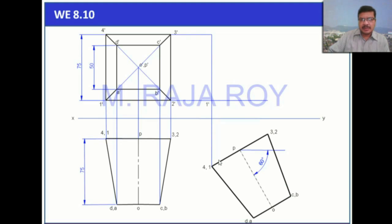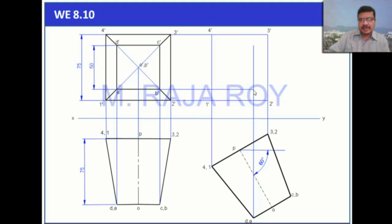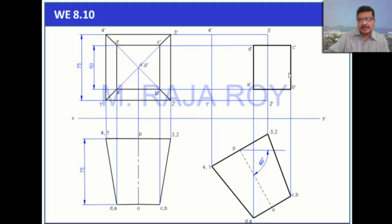Now project all the points to the front. This is the projector of 4 1 — draw the locus from 1 dash to get 1 dash here and 4 dash here. This is the projector for 3 2: here you get 2 dash and here 3 dash. Draw the projector for da — point a gives a dash and t dash here. Extend the projector from cb: here you get b dash and c dash. Draw the visible base, then the locus for the axis to get p dash and o dash.